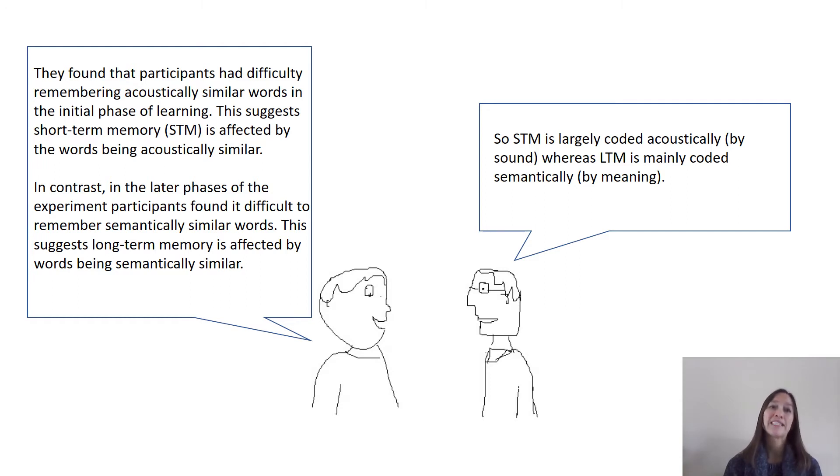In contrast, in the later phases of the experiment, when they were using long-term memory, they found it more difficult to remember the semantically similar words. So they concluded that short-term memory is largely coded acoustically, by sound, whereas long-term memory is mainly coded semantically, by meaning.